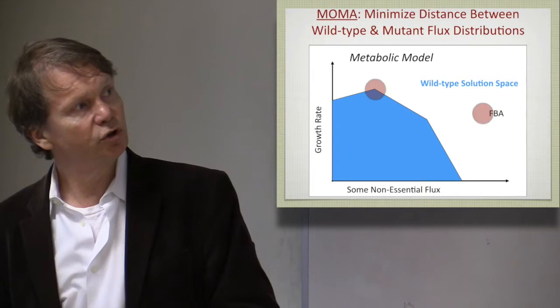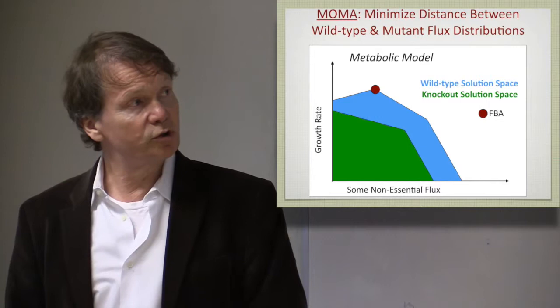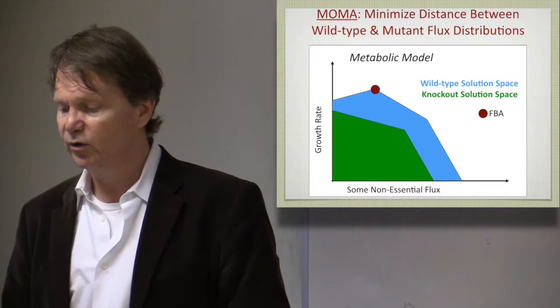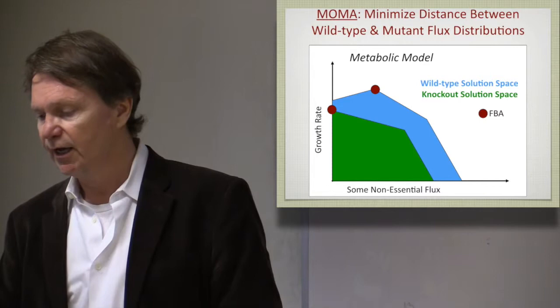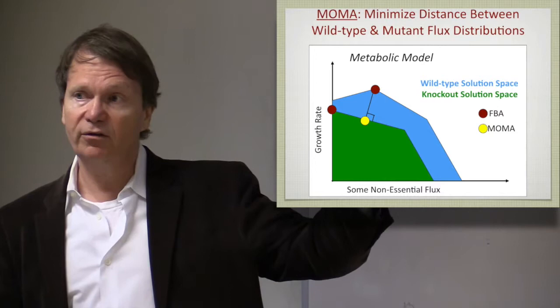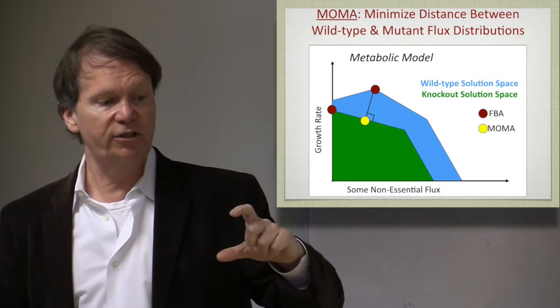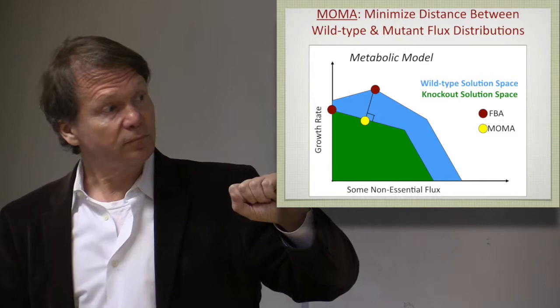So here is the growth rate as a function of a parameter, and there's an optimal solution you can calculate there using FBA. Now if you knock out the gene, the solution space will be smaller and is illustrated here in green. So if you do an FBA calculation here of an optimal growth rate, you would calculate this point. But there's no reason to expect that the knockout strain is optimal in any sense. And MOMA does a prediction based on Euclidean distance where it maps that red dot that was the original phenotype onto the reduced solution space and uses the criteria of the shortest distance. So it's a mathematical criteria.